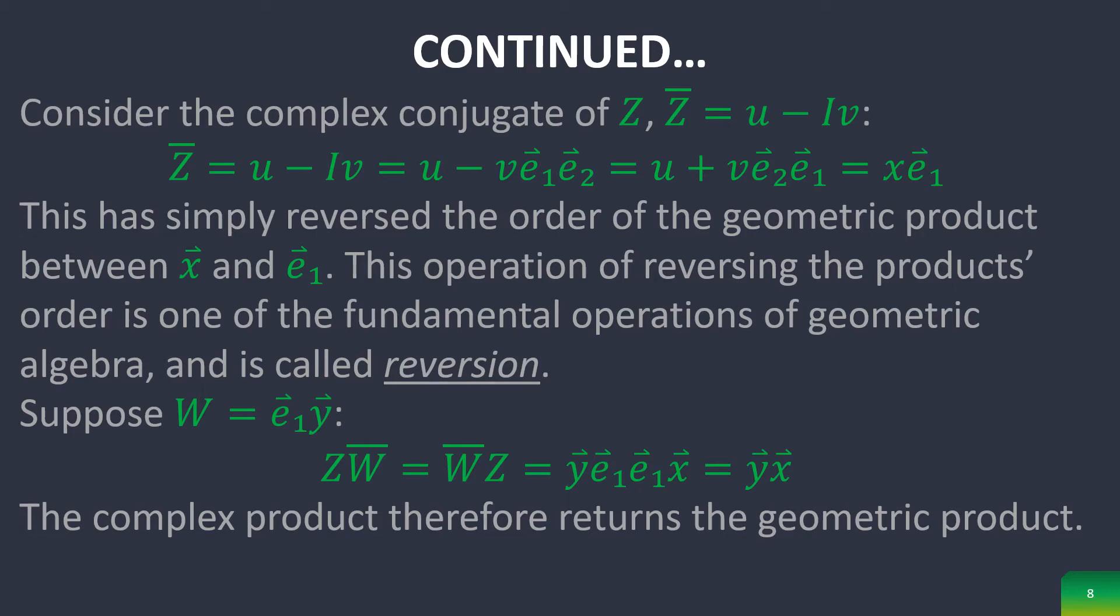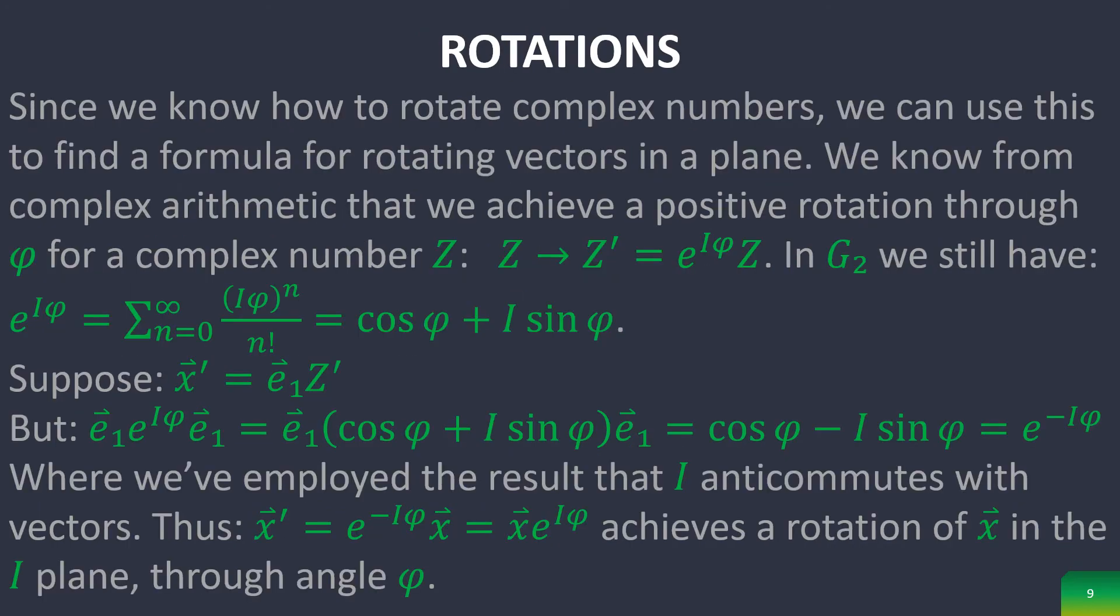This is where you reverse the order of the products in a given operation. And this can be proven easily through the equations in this slide. Because they're isomorphic to the complex numbers in planar geometric algebra, we can rotate them the same way, which is what this slide basically proves.